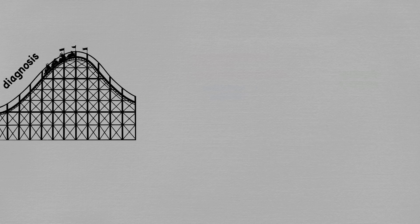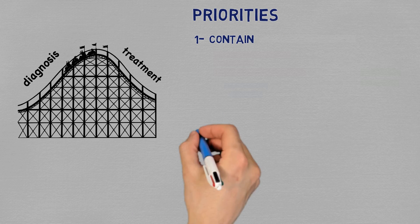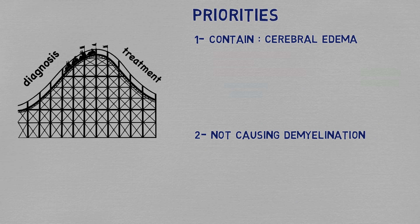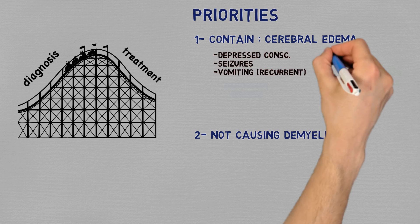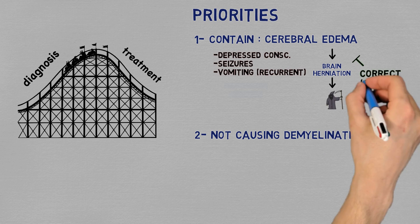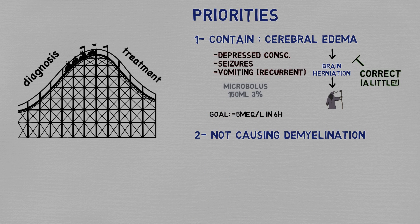Treatment is a lot simpler. The first priority is preventing the progression of cerebral edema if they have severe hyponatremia, and the second priority is not causing osmotic demyelination syndrome when you're correcting it. Severe hyponatremia is when it's causing cerebral edema with manifestations of increased intracranial pressure, depressed consciousness, seizures, and vomiting. The biggest concern is the edema progressing, causing brain herniation, and killing the patient. To prevent that, you stop the progressive edema in patients with evidence of increased ICP — just a modest increase in sodium is enough to halt the mechanism. The goal is to quickly correct around 5 mEq/L maximum using something like a microbolus approach.